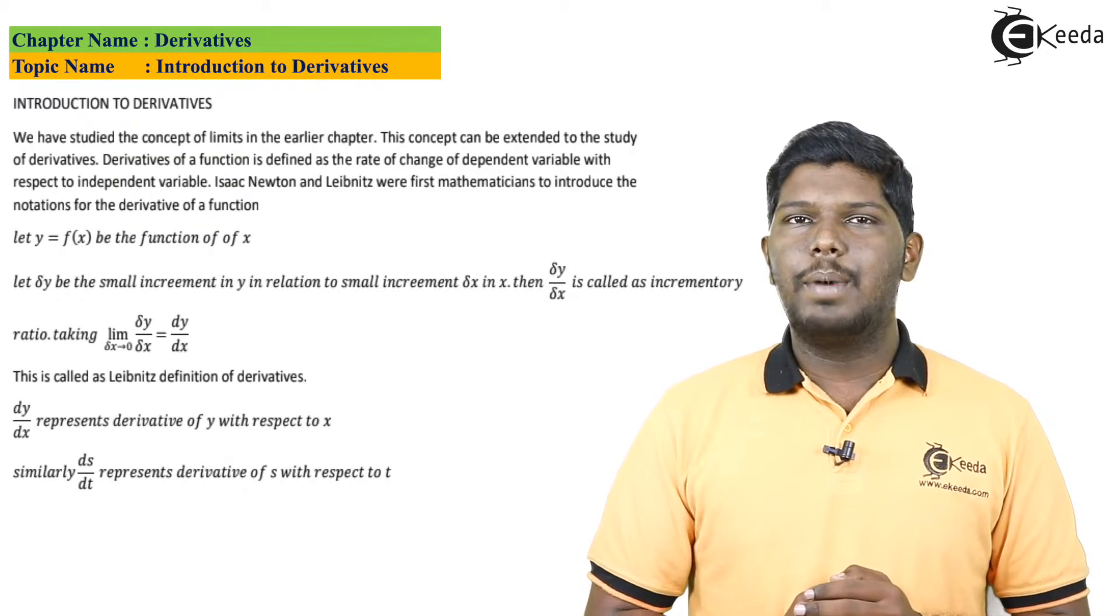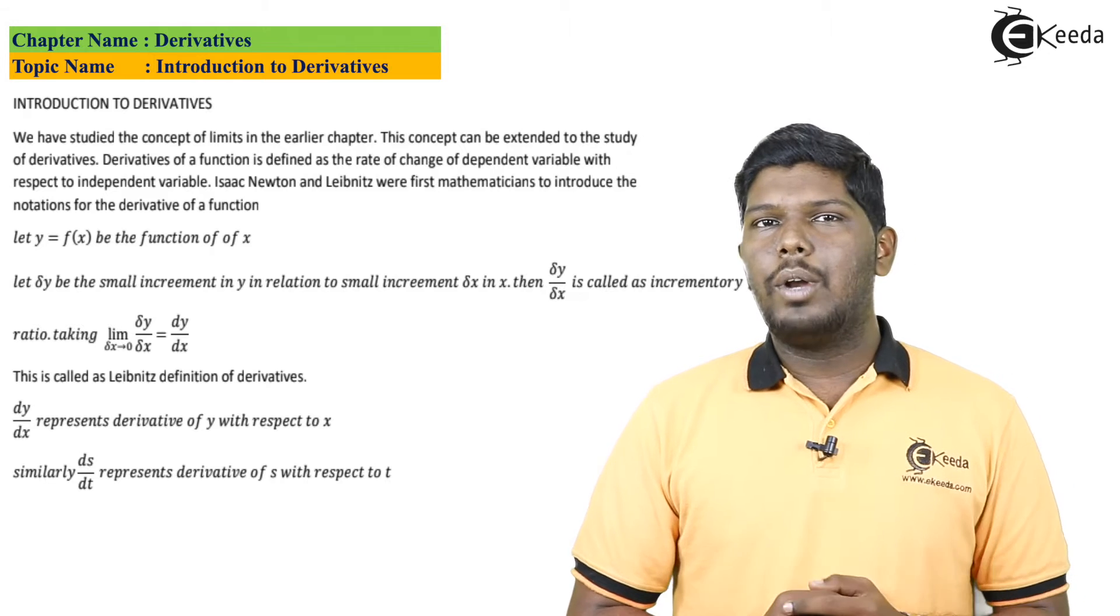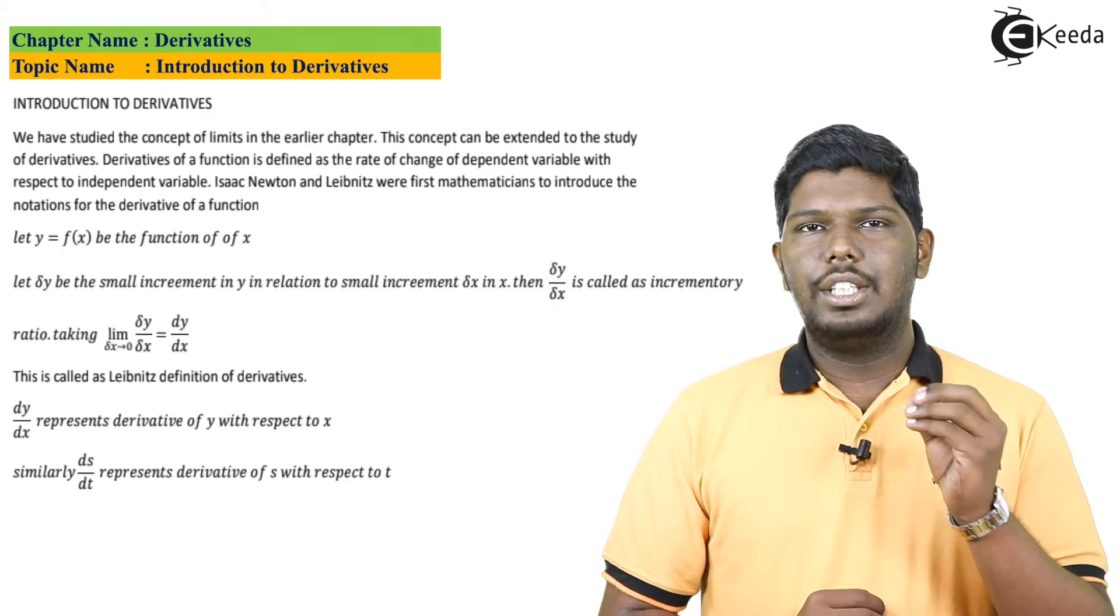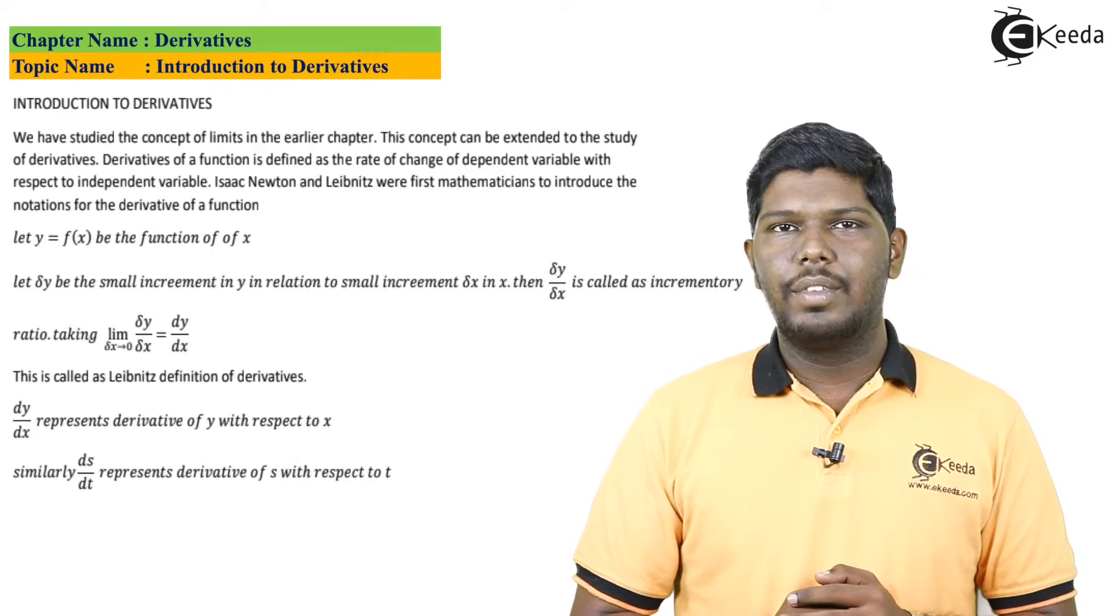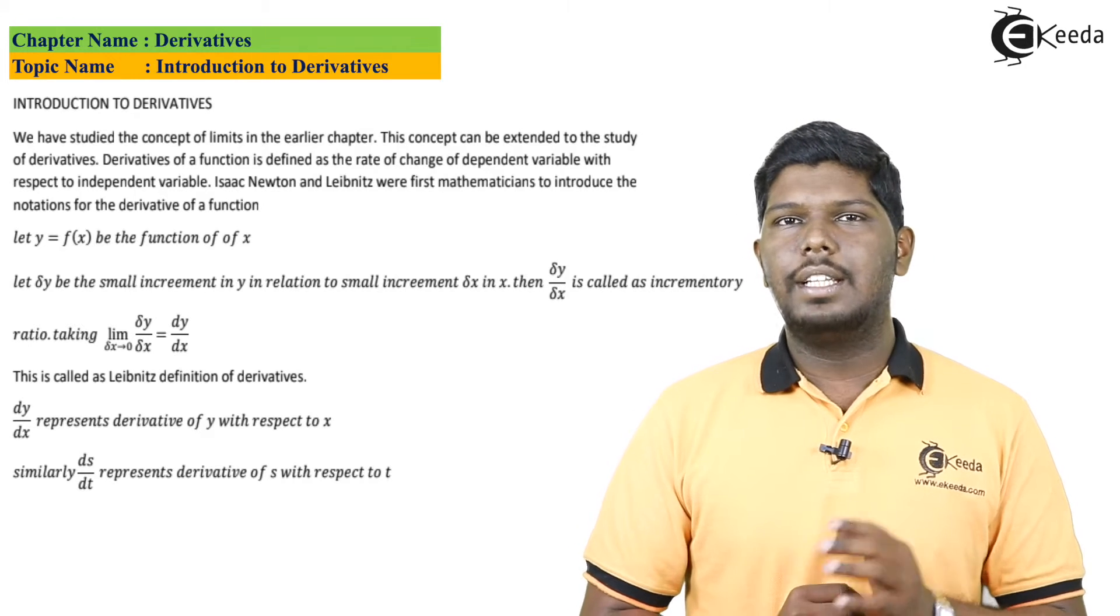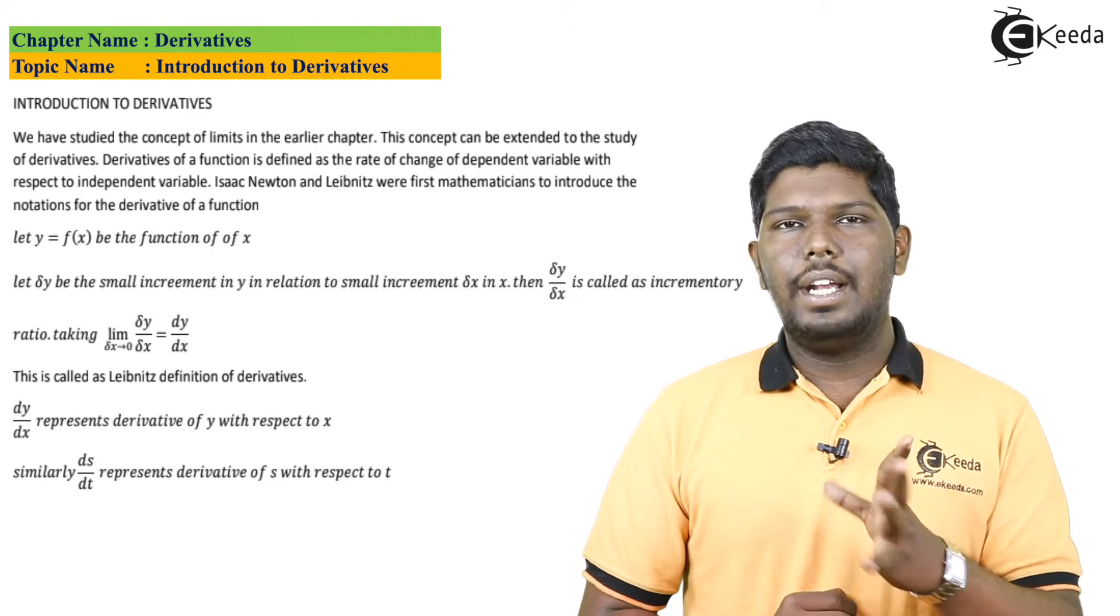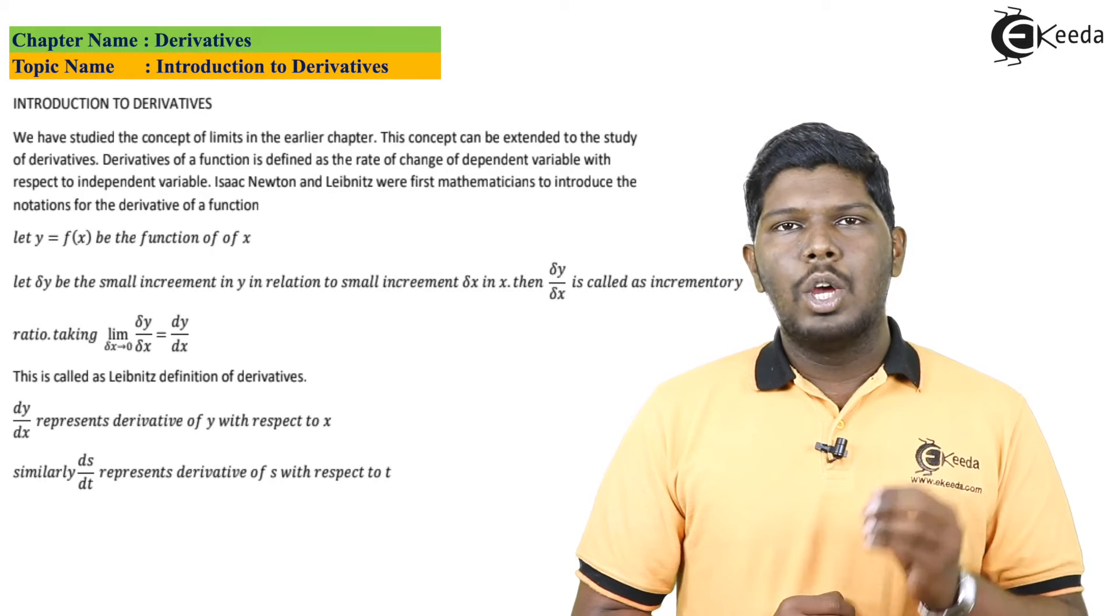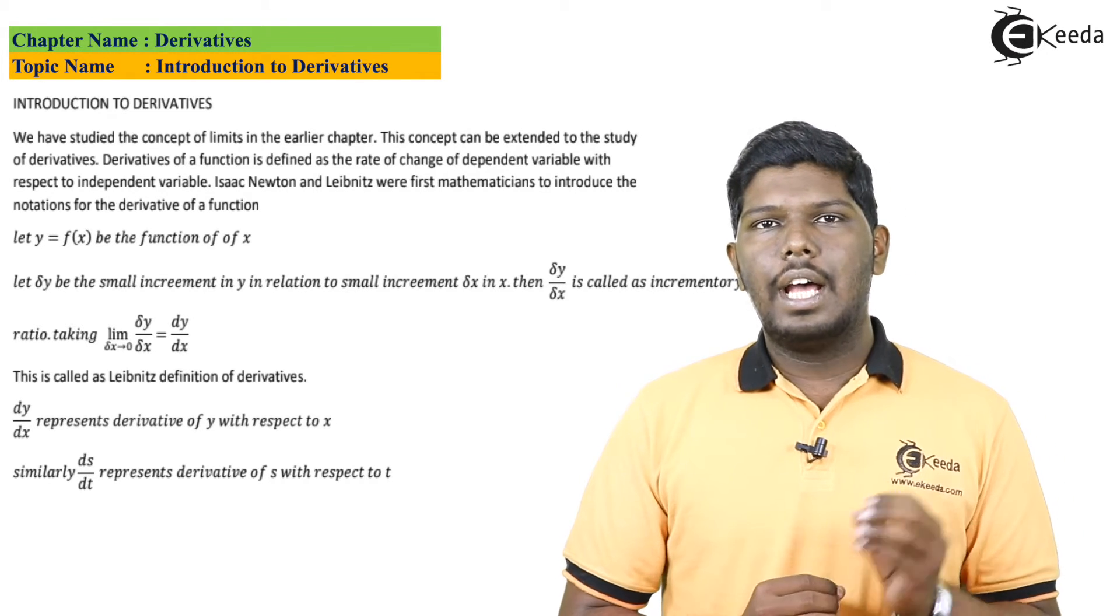If I talk about acceleration: what is acceleration? It is change in velocity with respect to time. So change in velocity is dv, and change in time is dt. Therefore, dv by dt is acceleration. Whenever two quantities are changing with respect to one another, we say there is differentiability.